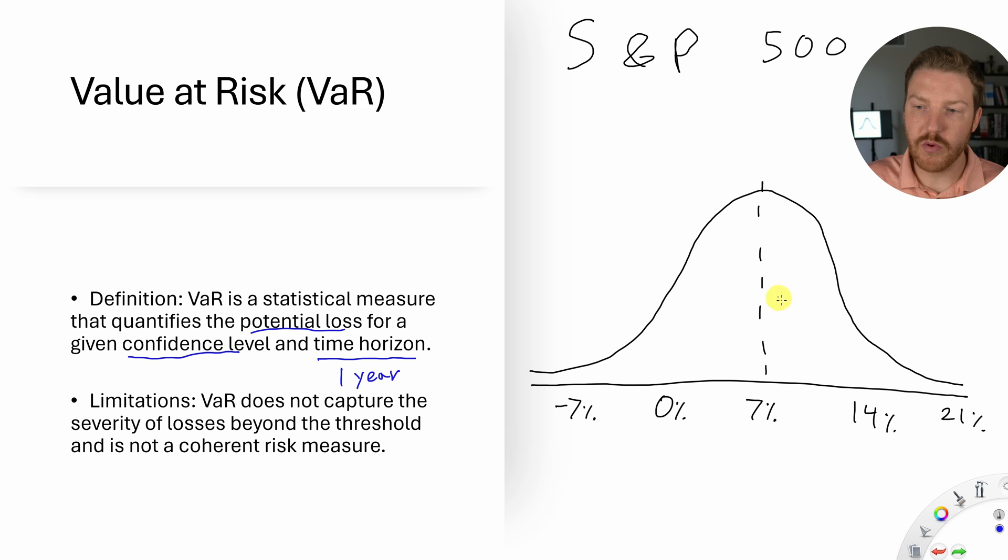However, if we have a good year, we might get up to 14% or even 21%, but this is an outlier year that is farther out into the tail. Whereas if we go back down into the left tail and we have a bad year, we might lose 0% or even negative 7% or even more.